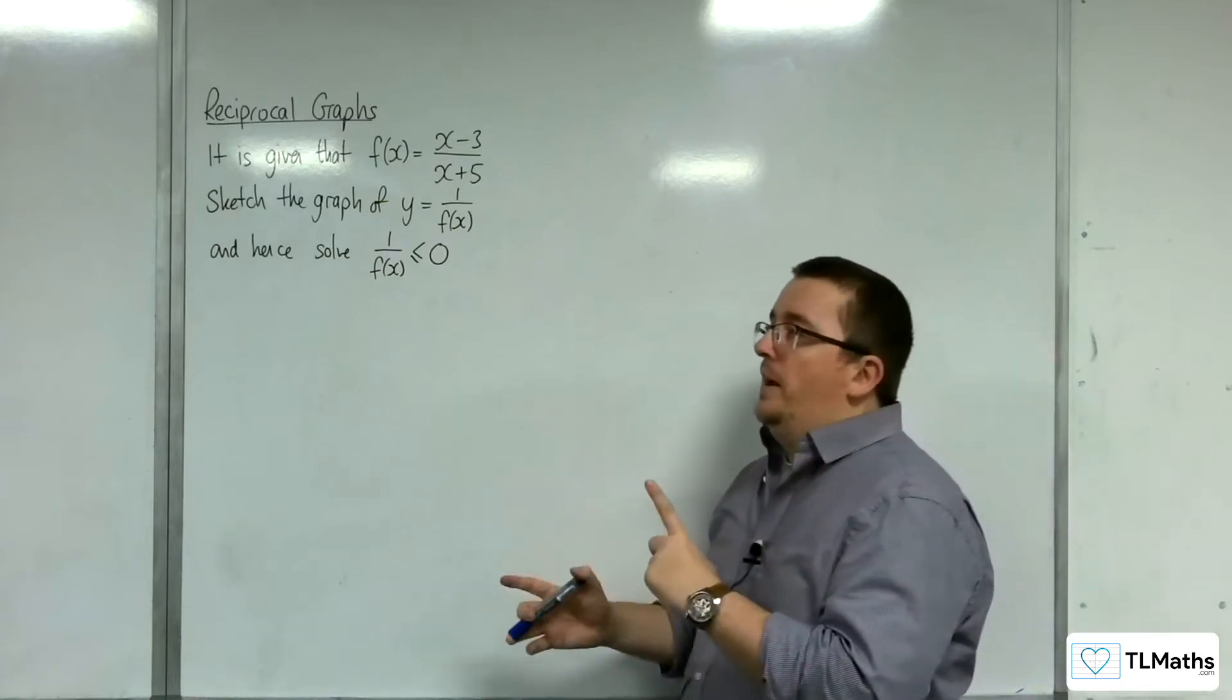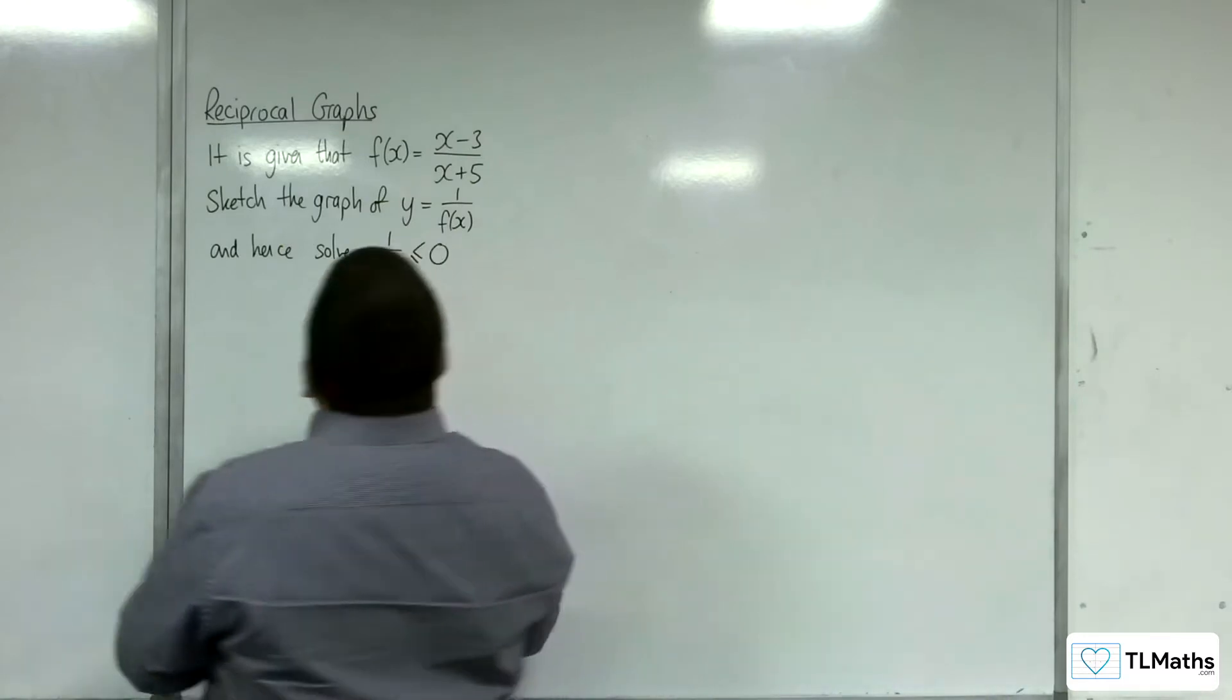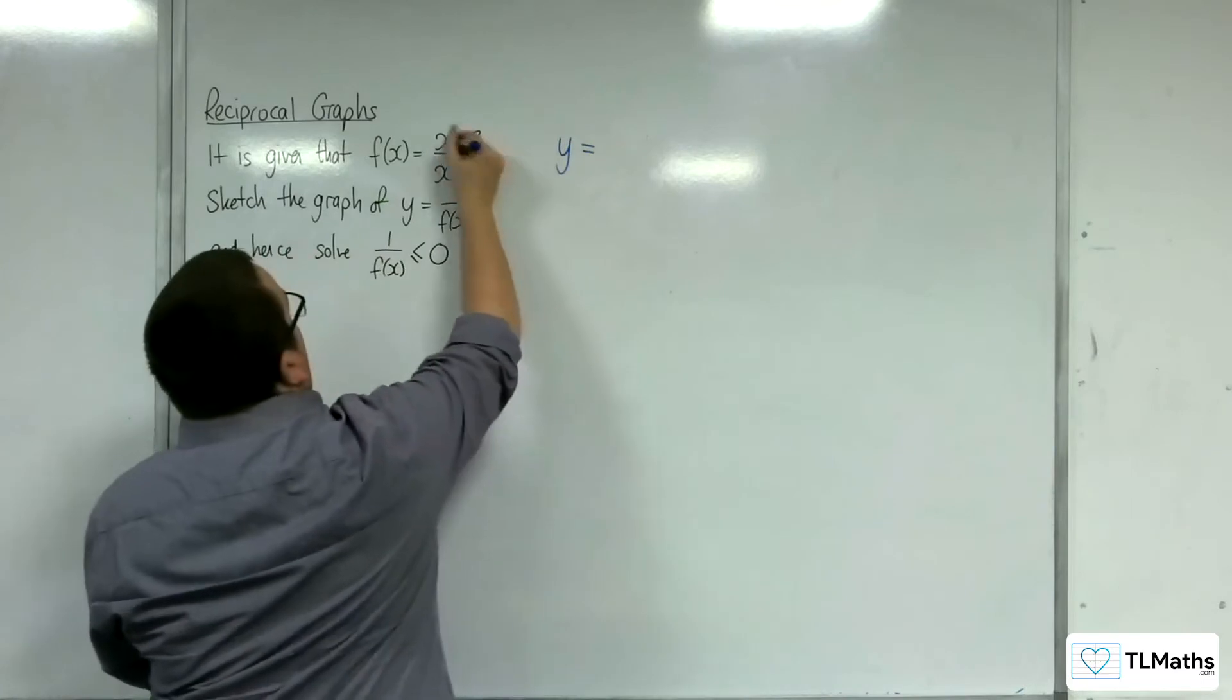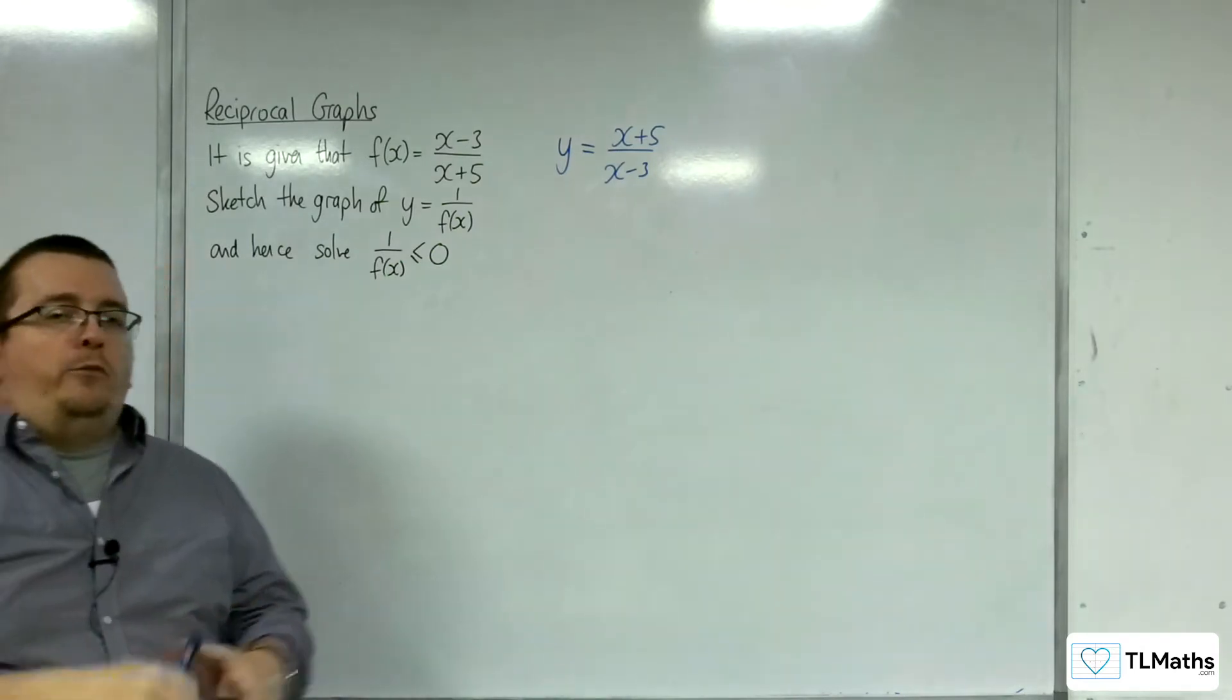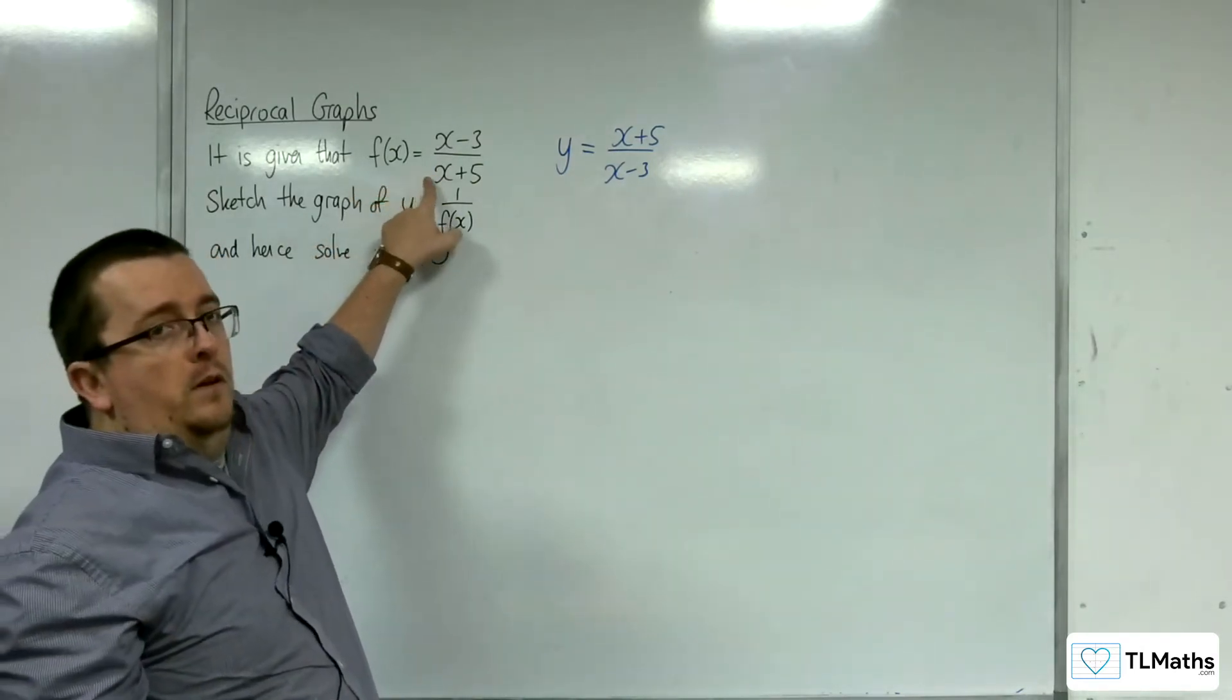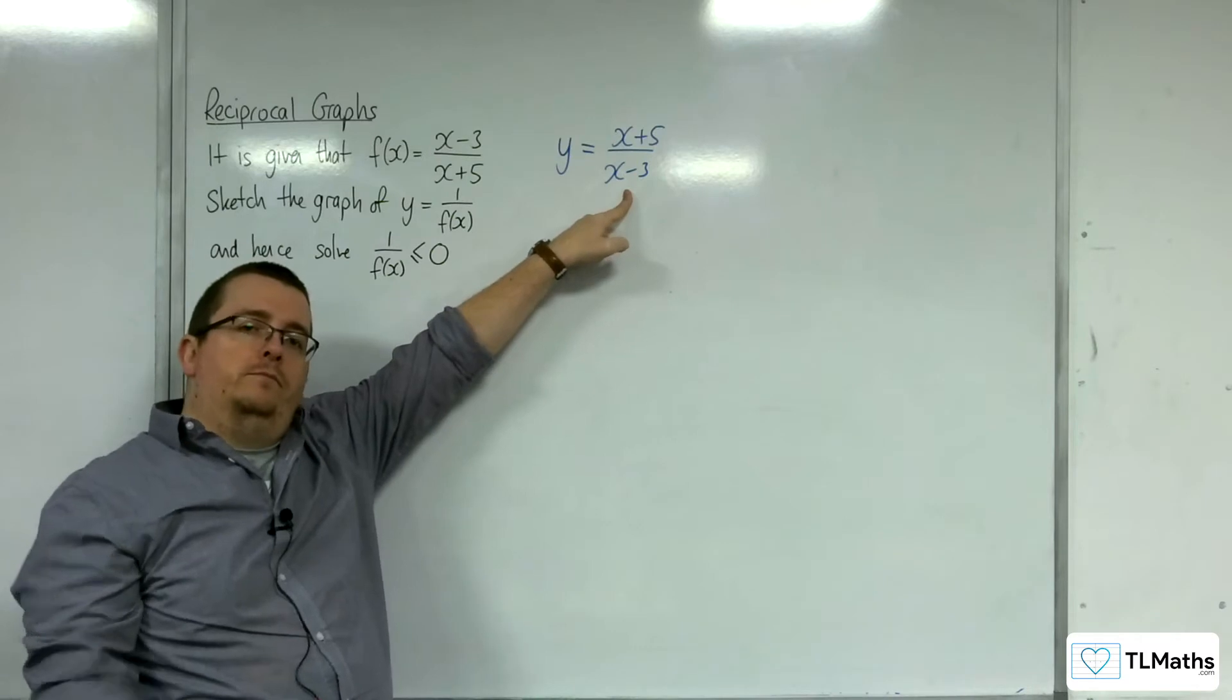Now, the reason why I wouldn't do that is because 1 over f of x is just going to be 1 over this, which is x plus 5 over x minus 3. So, the question is, why would I bother sketching the original function when I could just as easily sketch the function from that?